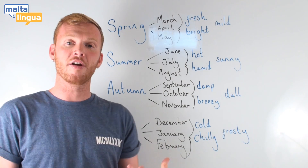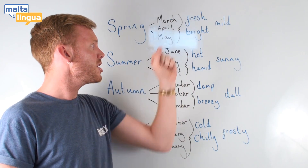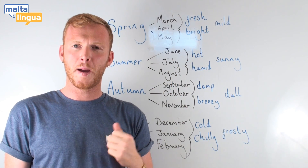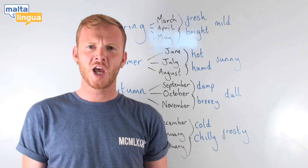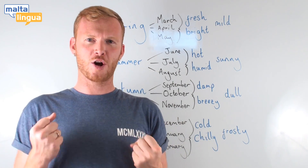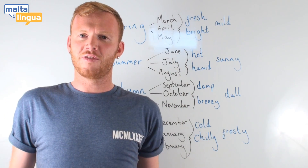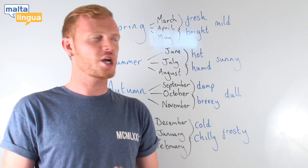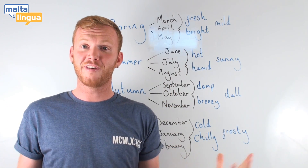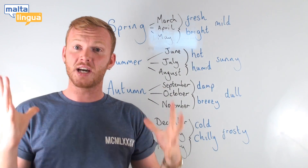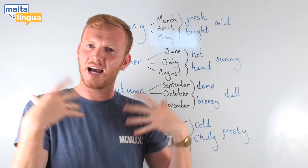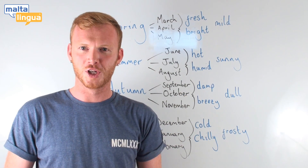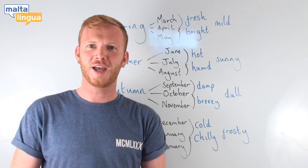Here are three adjectives we can use to describe the weather in springtime: fresh, bright, and mild. 'Fresh' refers to the air quality — the winter is over and it's before the heat of summer, so we have good fresh air quality. 'Bright' refers to the sunlight — the dark days of winter are past and the days are becoming longer. 'Mild' refers to temperature — not too cold, not too hot, somewhere in between.